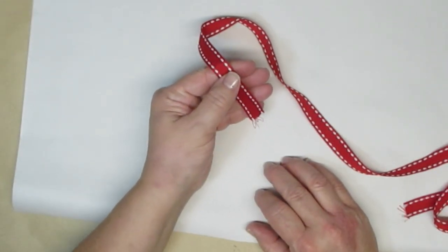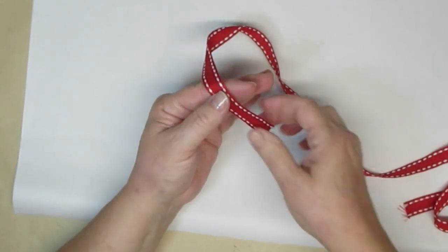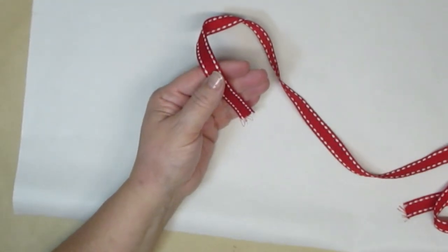Hold one end of the ribbon like so and decide how long you want the tail to be. You'll be able to shorten it but you won't be able to lengthen it.